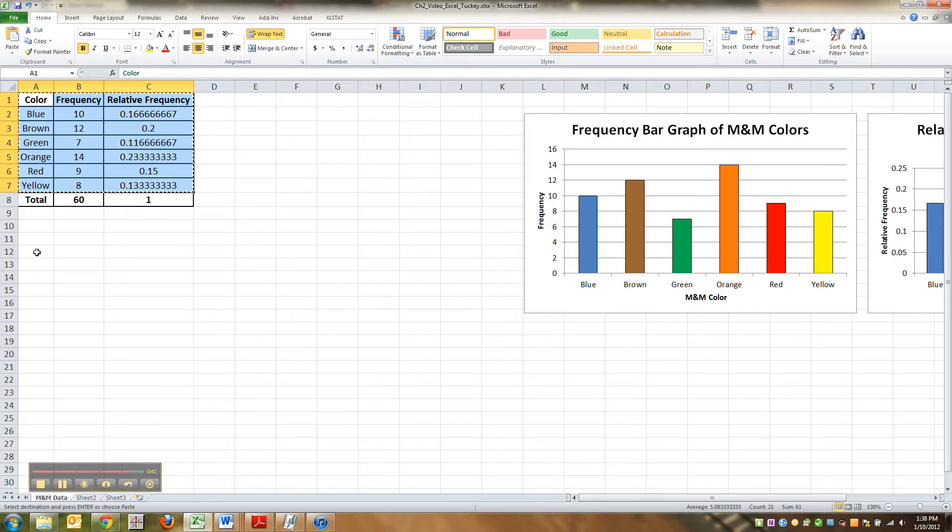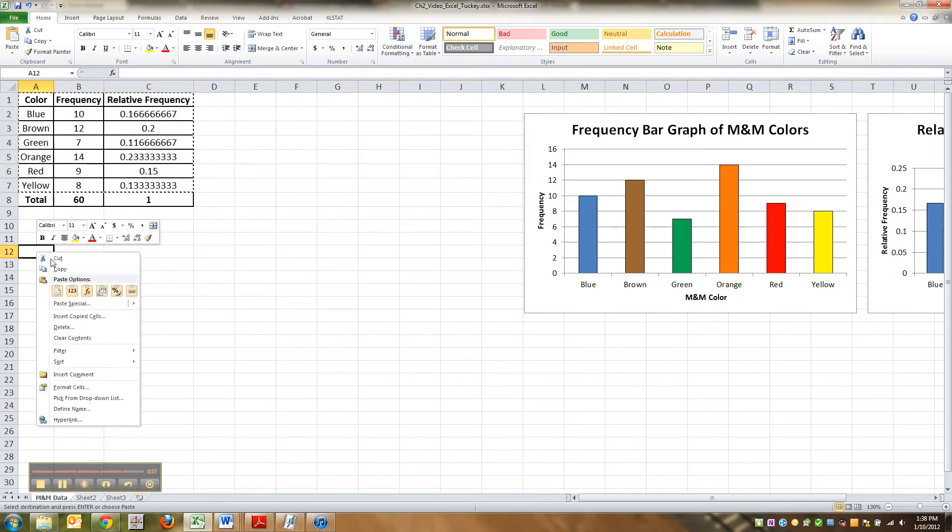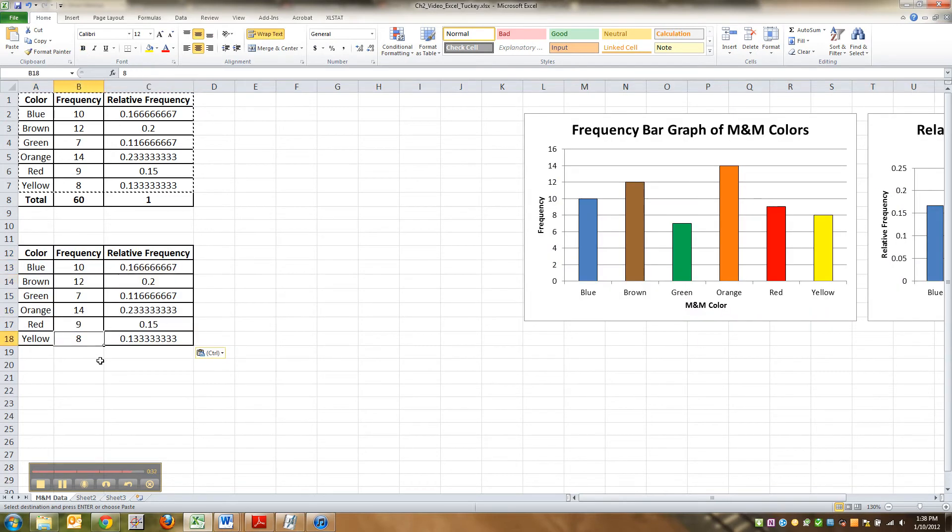I'm going to highlight this table. I'm going to copy it. Control C, copy. Or you can go up here, copy. And then I go down here, I'm going to paste it. Paste. Or control V is how I do it.